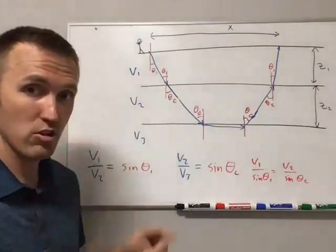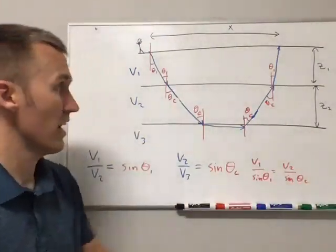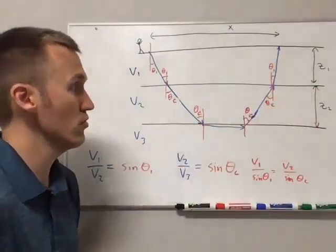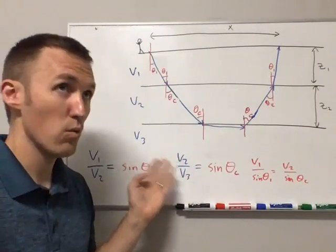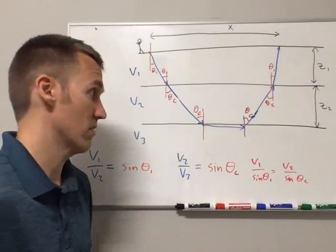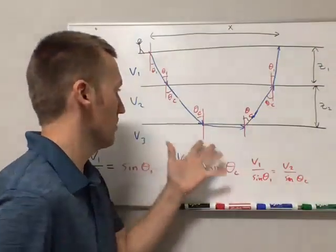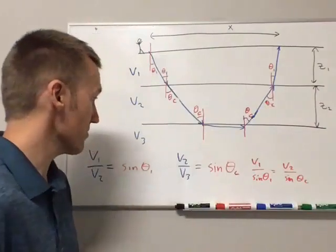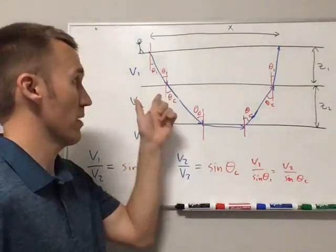So again, we have our total distance x from source to sensor. We have depths, in this case, z1 and z2 for the two layers. Again, the lowermost layer is generally considered to be infinite in extent, just for mathematical reasons. It doesn't really matter actually how thick it is, because this wave is not traveling through it. But anyway, we won't worry about down there. And of course, we have the ray path.